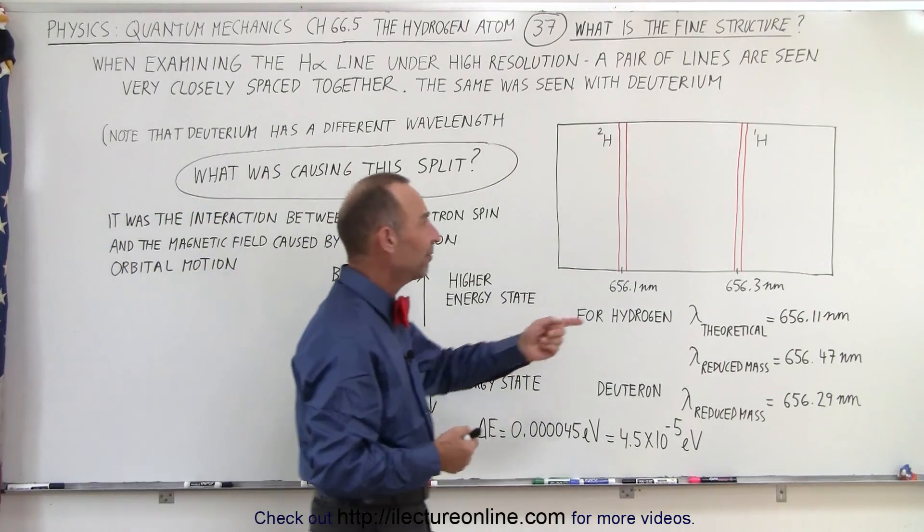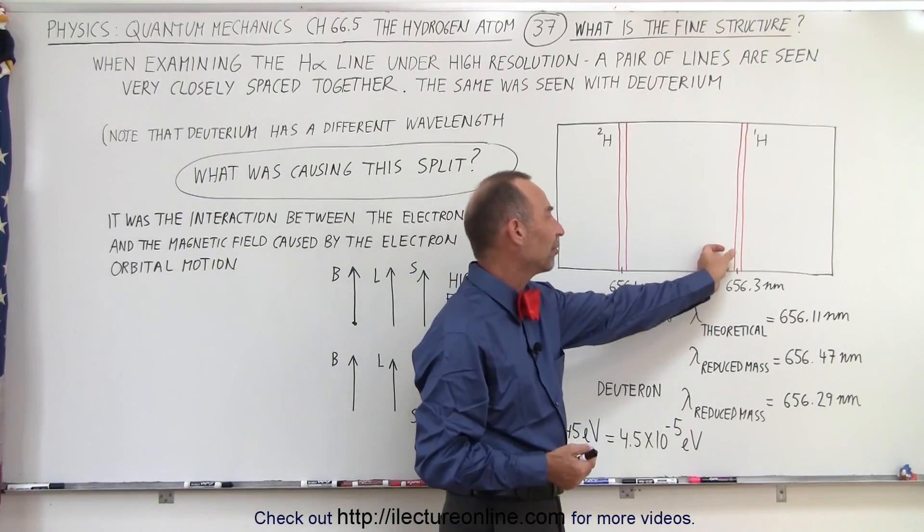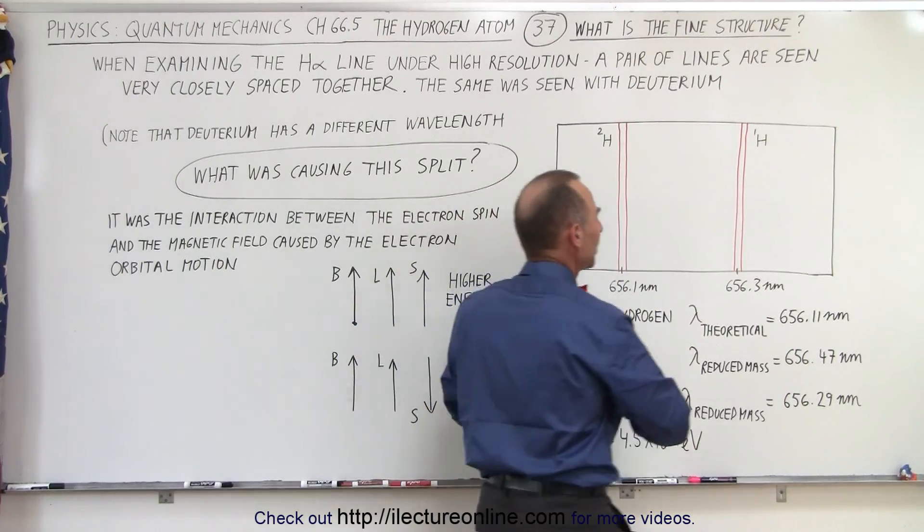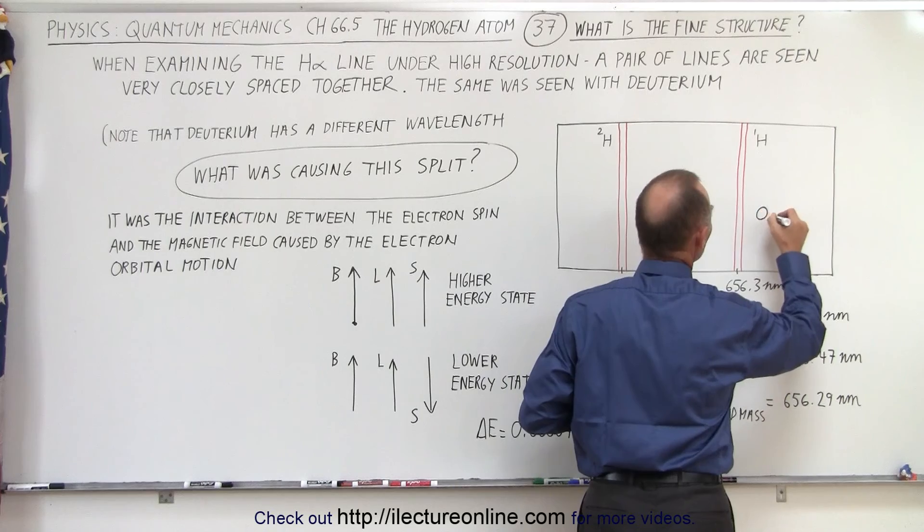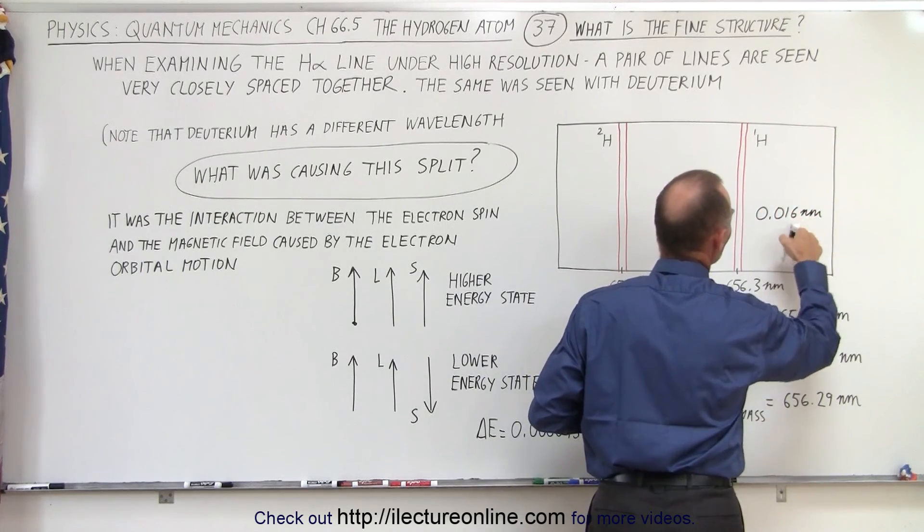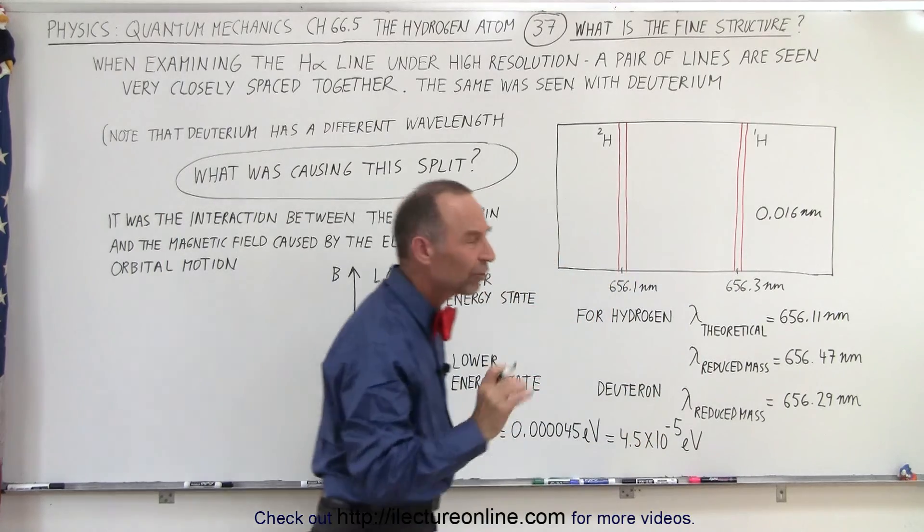The wavelength is about 656 nanometers, but you can see the very narrow spacing between the two. Matter of fact, the spacing between the two is somewhere in the order of 0.016 nanometers. So you can see that they're very, very closely spaced together.